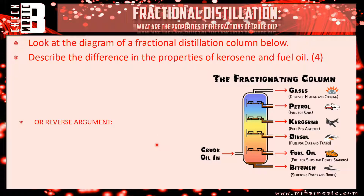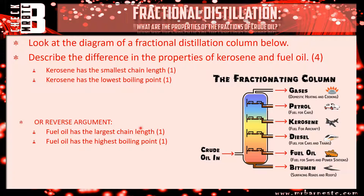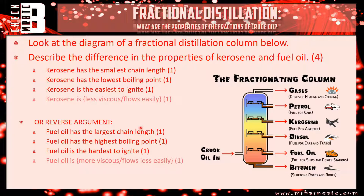Let's see how you've done. Describing the difference in properties of kerosene and fuel oil: for chain length, kerosene has the smallest chain length, or you could say fuel oil has the largest chain length. For boiling points, kerosene has a lower boiling point because it's nearer the top, or fuel oil has the highest boiling point. For ease of ignition, kerosene is easier to ignite and fuel oil is harder to ignite. And finally for viscosity, kerosene is less viscous — it flows easily — while fuel oil is more viscous and flows less easily.